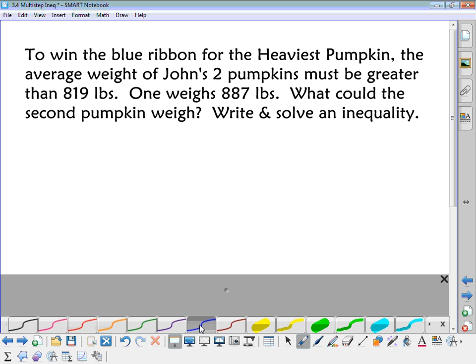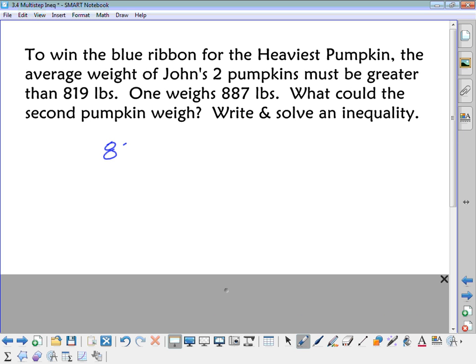So his first one was 887. And I don't know what the other one is, right? So I'll just put P for pumpkin. And then, after I add them, I would have to divide by 2 to get their average, right? Okay, so it has to be, the average has to be greater than 819. So can it be equal to 819? No, it has to be more, okay? So greater than 819. So that's the inequality you would write to solve the problem.